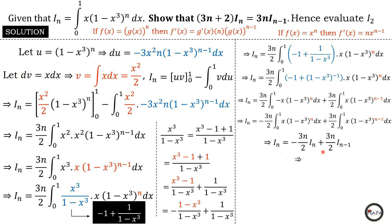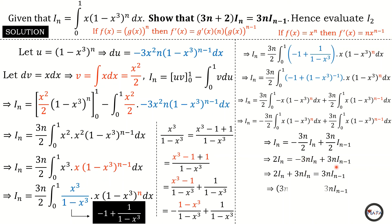Multiplying all terms by two: two I of n equals negative three n times I of n plus three n times I of n minus one. Adding three n times I of n to both sides: on the left it cancels with the negative three n I of n, giving two I of n plus three n I of n. Factoring I of n on the left gives (3n plus 2) times I of n, and the right side gives three n times I of n minus one. We have proved that (3n plus 2) times I of n equals three n times I of n minus one.